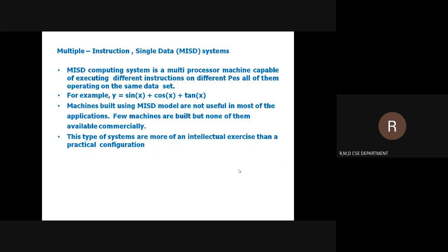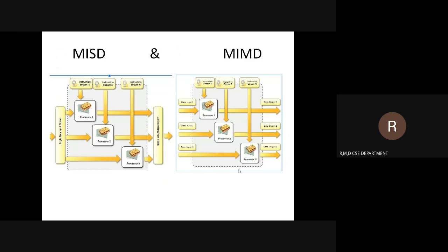Multiple Instruction Single Data means many instructions are given but only one single data is handled. It is a multi-processor machine capable of executing different instructions. For example, y = sin(x) + cos(x) + tan(x) — this is the best example. Few machines are built but none are commercially available. In the diagram, one single data input is supplied; instruction 1, instruction 2, and instruction 3 each process the same data in separate processors, giving a single data output stream.